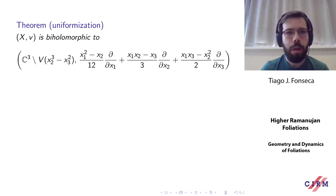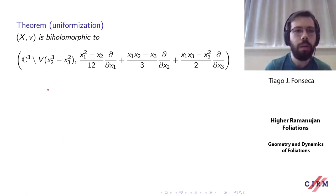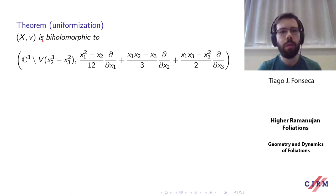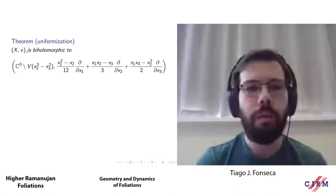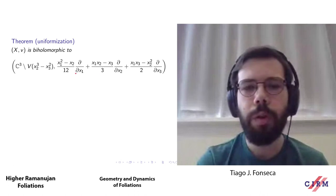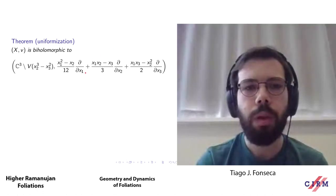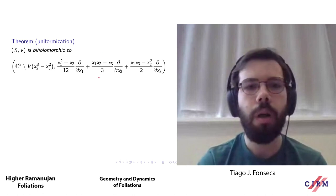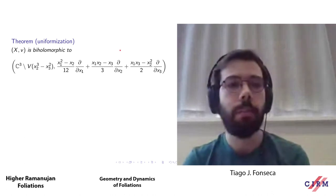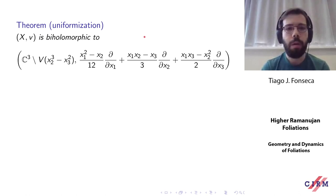Here's a theorem I call uniformization: the complex manifold X with this vector field v is biholomorphic to an open subset of three-dimensional affine space, and v gets identified with the vector field corresponding to the Ramanujan differential equations. So in some sense you are uniformizing this algebraic differential equation in terms of the Lie group SL2(C), and from this you can deduce many nice symmetries that these equations satisfy with respect to SL2(C).